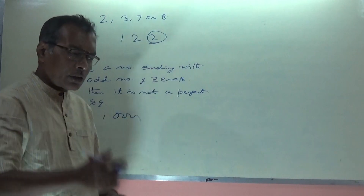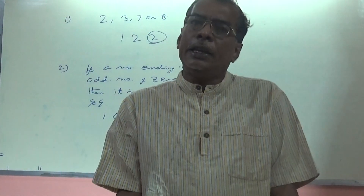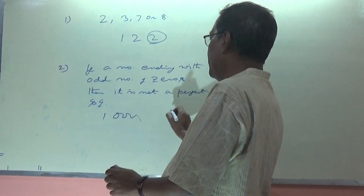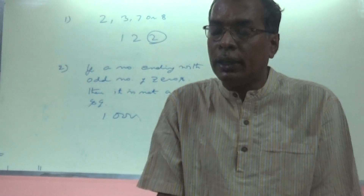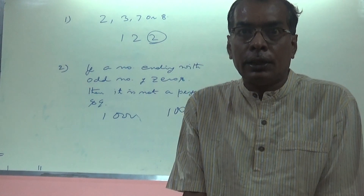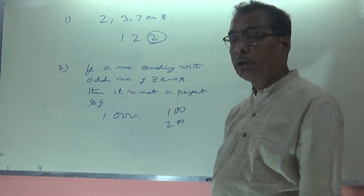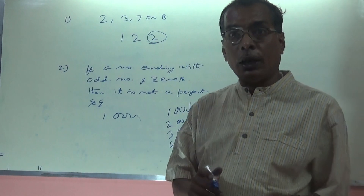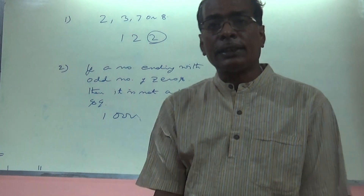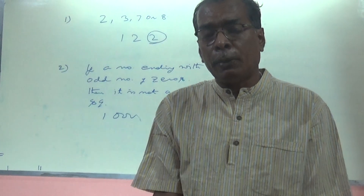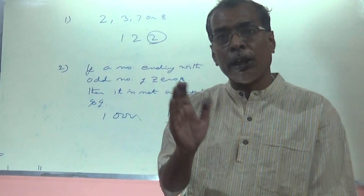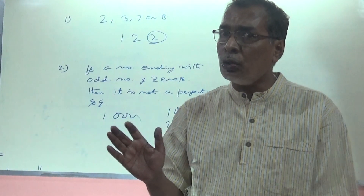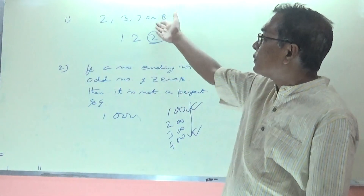You may ask: if a number ends with an even number of zeros, will it always be a perfect square? I am not saying that. For example, 100 ends with two zeros — an even number — so naturally it should be a perfect square, and it is. But consider 200, 300, or 400. Out of these, only some are perfect squares. So when a number ends with an even number of zeros, you cannot directly claim it is a perfect square. You must verify using the prime factorization method.